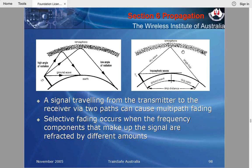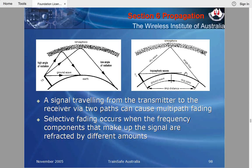This is called a sky wave, and when it refracts back to the first landing point, that's a single hop. It can be reflected back off the ground and continue on, but it will be weaker. The distance between the transmitting antenna and where the wave first reaches back to the ground is called the skip distance. The area in between, where no signal is received, is referred to as the skip zone.